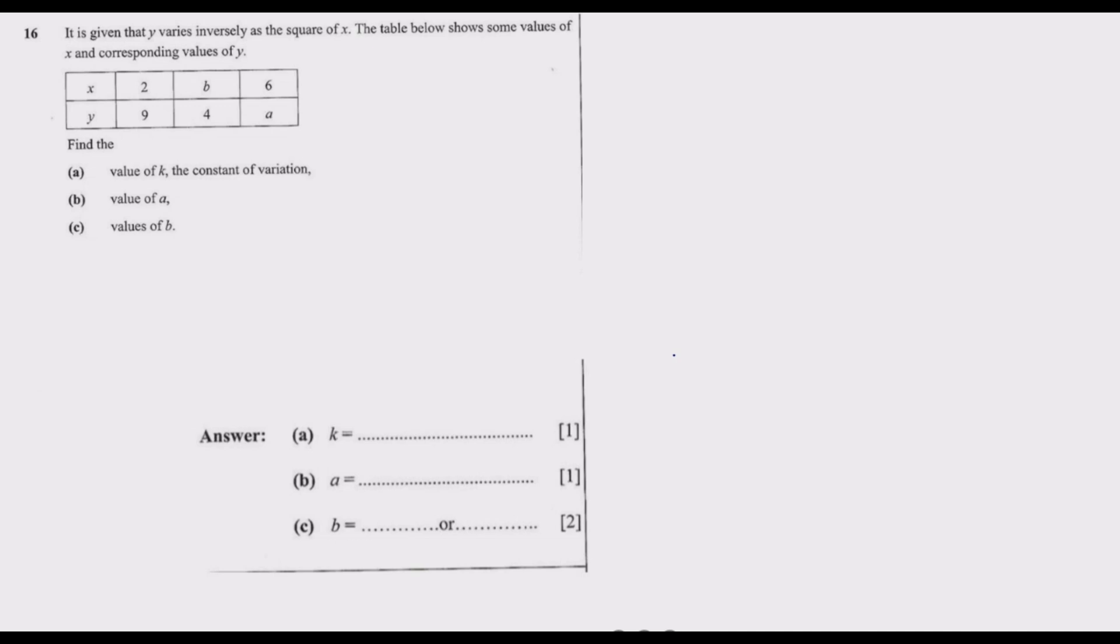Question 16 states: It is given that Y varies inversely as the square of X. The table below shows some values of X and the corresponding values of Y. Find: (a) the value of K, the constant of variation, (b) the value of a, and (c) the values of B.